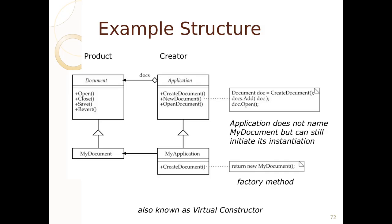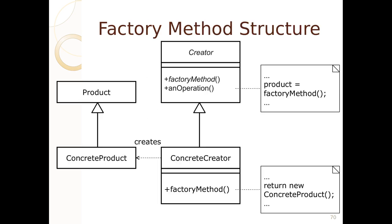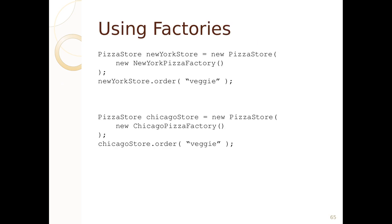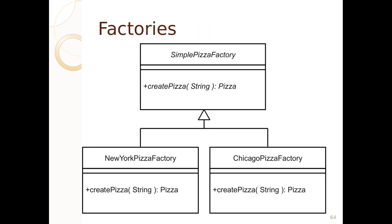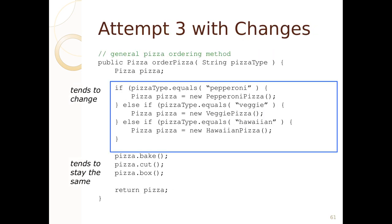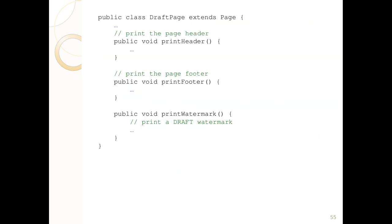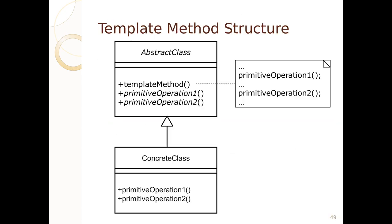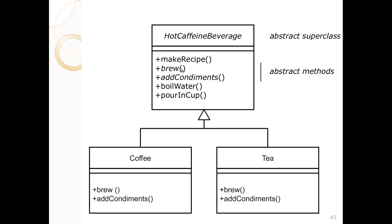So, we covered in this presentation the factory method pattern, factories — objects that make other objects — and also the template method and hooks. The template method had abstract methods that got implemented and were called inside of an algorithm, such as the coffee-tea algorithm. We covered all of those things in this talk.